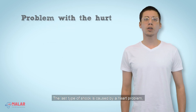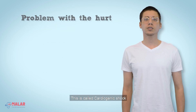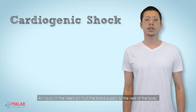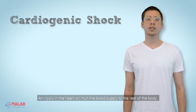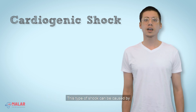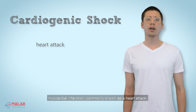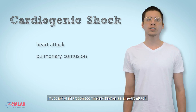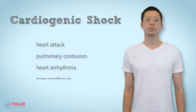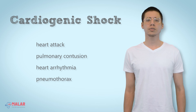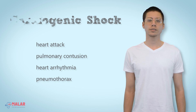The last type of shock is caused by a heart problem and is called cardiogenic shock — an injury to the heart that hurts blood supply to the rest of the body. This type of shock can be caused by myocardial infarction, commonly known as heart attack, pulmonary contusion, heart arrhythmia, pneumothorax, and more.